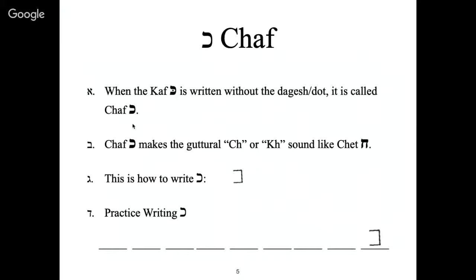So basically add the Kus sound with the dagesh and it'll make the same sound as the head. When there is no dagesh, the writing would be exactly like the Kaf except there's no dagesh. The Kaf is kind of like a U on its side, starting to make a square but you leave a side off.